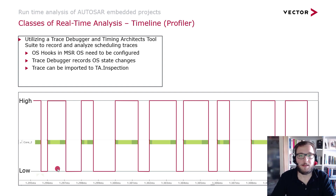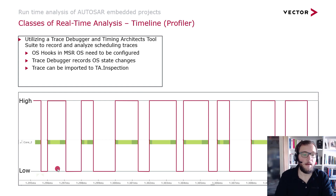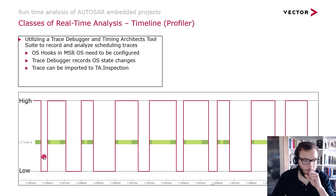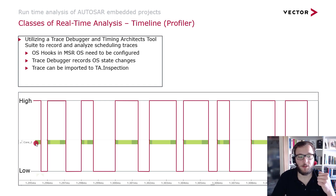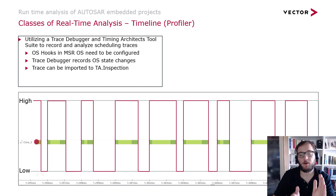Let's have a look at the timeline itself. We will first have a look at how such a timeline looks and how you can get to such a timeline, and later talk about the pros and cons. Here on the bottom you can see a timeline that you get when you record the task state transitions from your OS. It's compared here with pin toggling for the same task, where you toggle a pin to the high side whenever the task is activated, and it returns to the low side once the task is terminated.